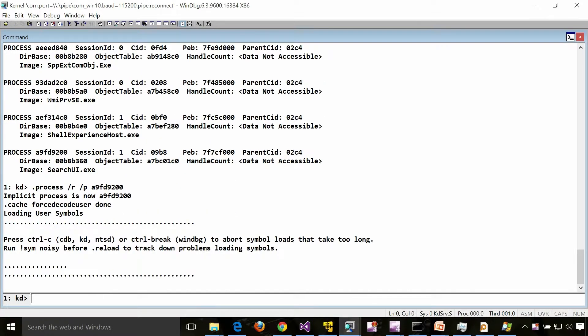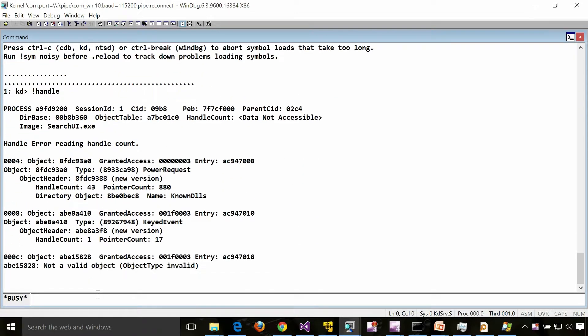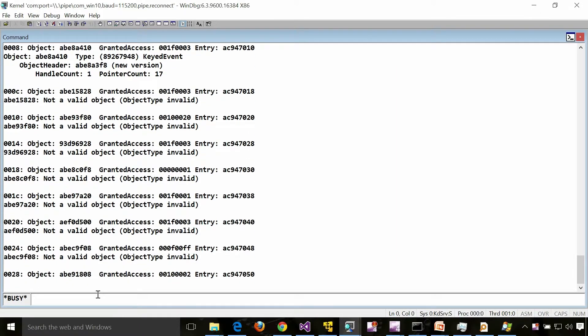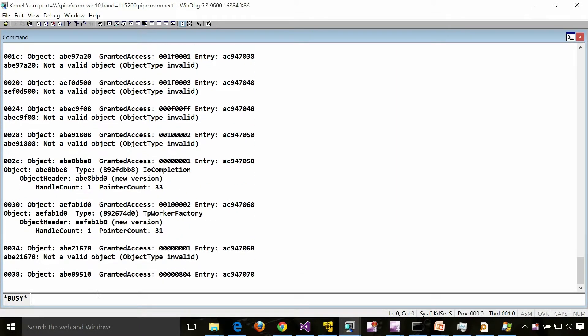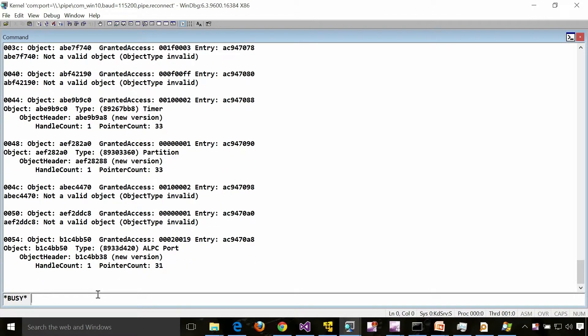Now what you can do is you can do a !handle. This will display all the handles associated with that particular process, both in kernel mode and in user mode.